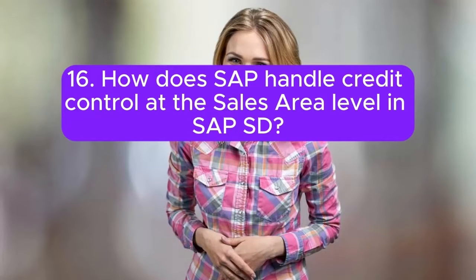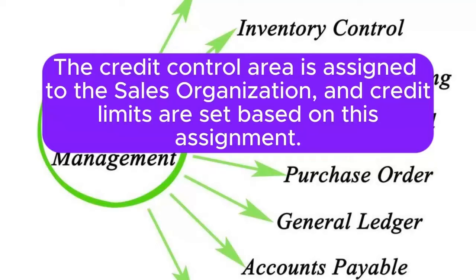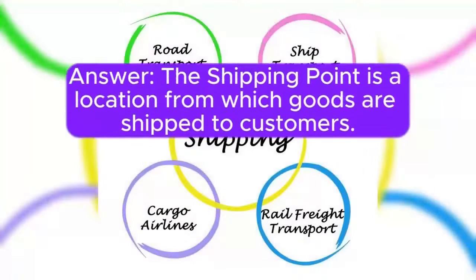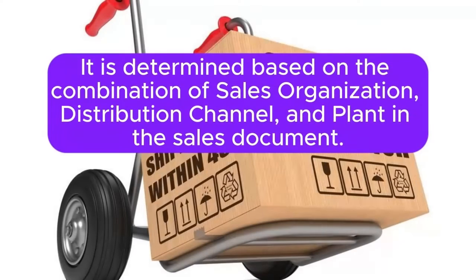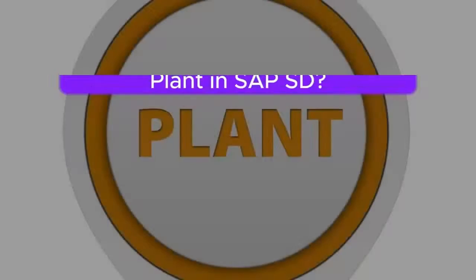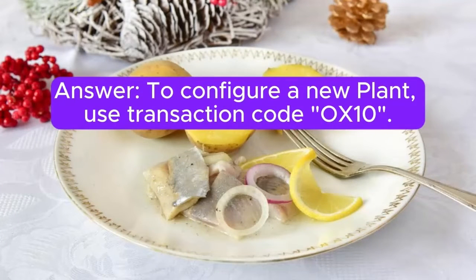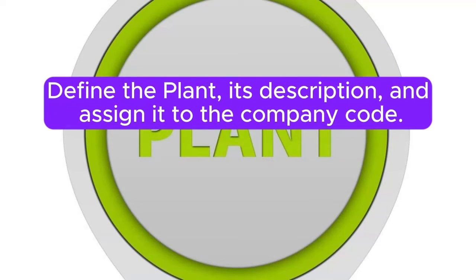Question 16: How does SAP handle credit control at the sales area level in SAP SD? Answer: Credit control is managed at the sales area level in SAP SD. The credit control area is assigned to the sales organization, and credit limits are set based on this assignment. Question 17: Explain the purpose of the shipping point in SAP SD. Answer: The shipping point is a location from which goods are shipped to customers. It is determined based on the combination of sales organization, distribution channel, and plant in the sales document. Question 18: How can you configure a new plant in SAP SD? Answer: To configure a new plant, use transaction code OX10. Define the plant, its description, and assign it to the company code.